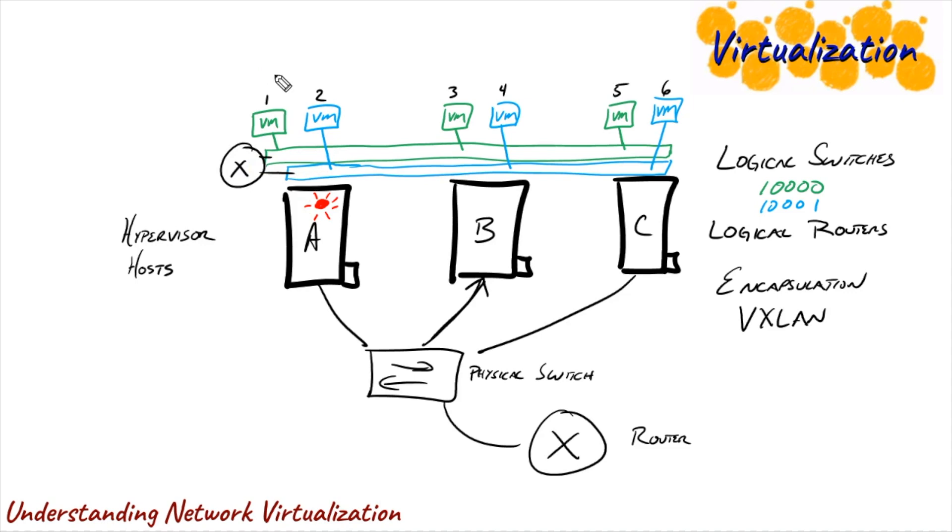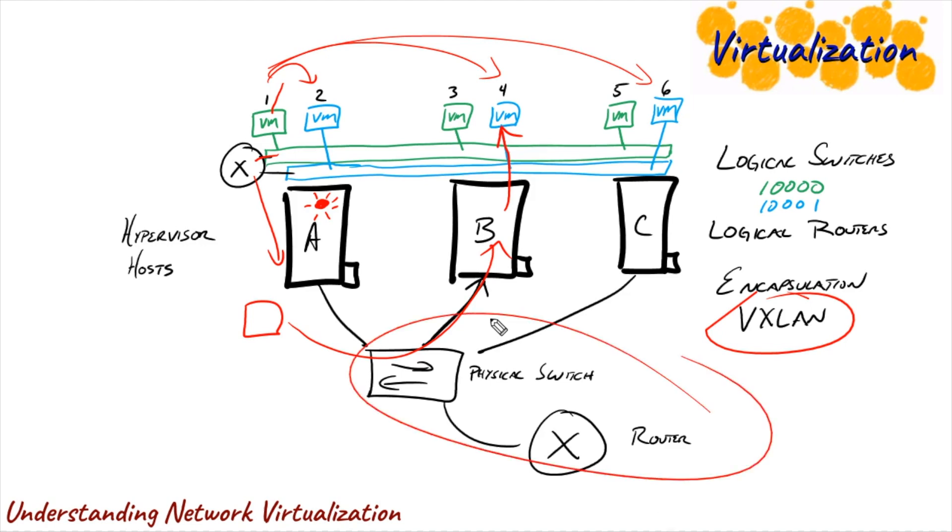Whether it's a virtual machine wanting to communicate with virtual machine two or four or six, the process will work exactly the same way by going into the virtual machine through the logical router and then out of host A encapsulated using the VXLAN technology to be able to cross over to host B, where it can then be forwarded directly to virtual machine four. And the crowd goes wild because we've created logical switching and even routing without having to affect the physical network.